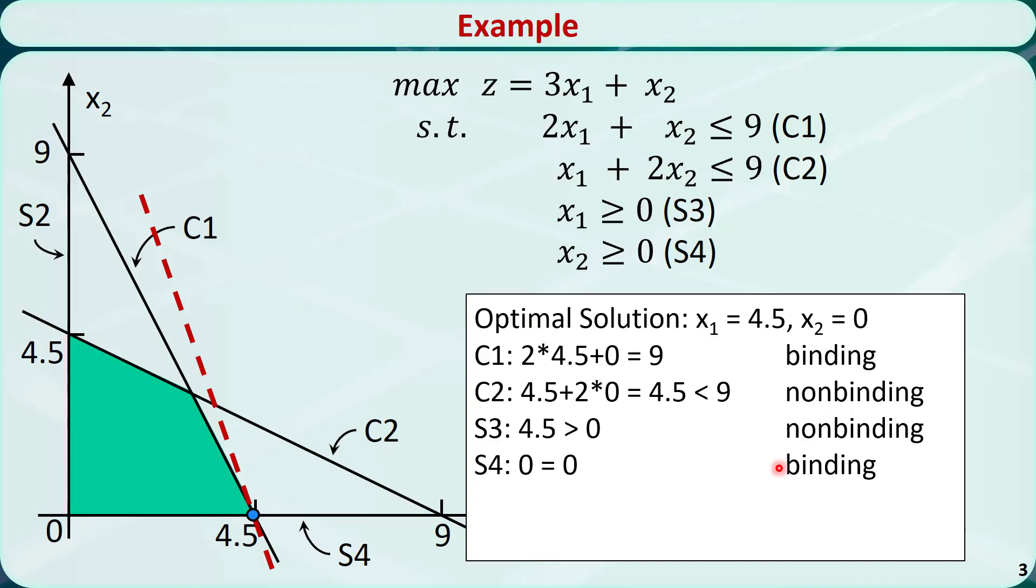We can also tell whether a constraint is binding or not directly from this figure. If the optimal solution is on the constraint line, then it's binding.